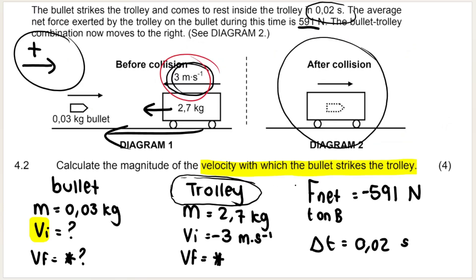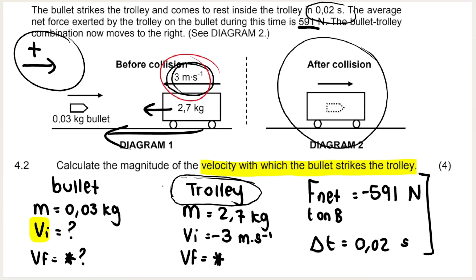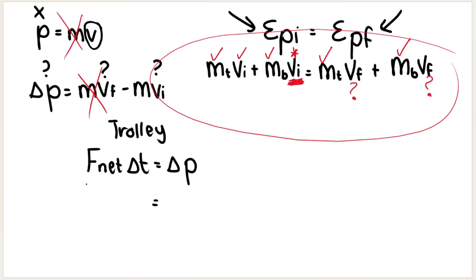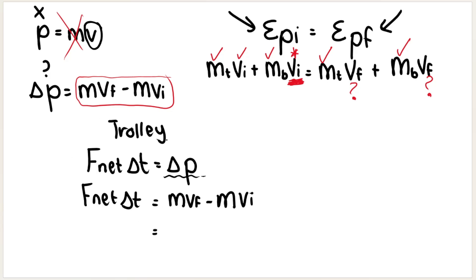The clue is in the given information. The formula from the formula sheet we'll use is F_net × Δt = ΔP — you need to write it exactly as given on the formula sheet, then expand it. This is the net force multiplied by the time equals the change in momentum. Since we have more information about the trolley, I'm going to use this formula for the trolley first. So F_net × Δt, and ΔP expands as given on the formula sheet.